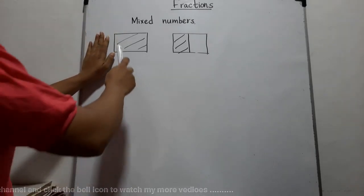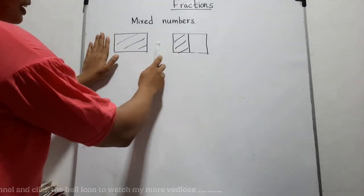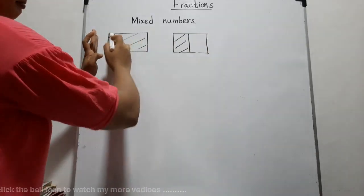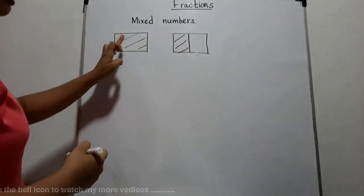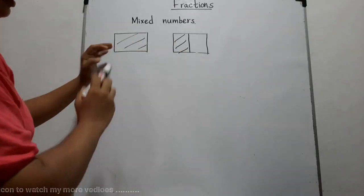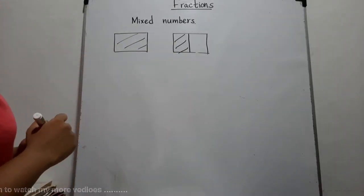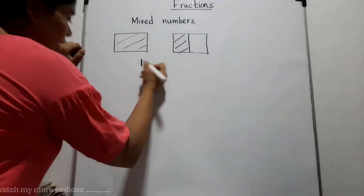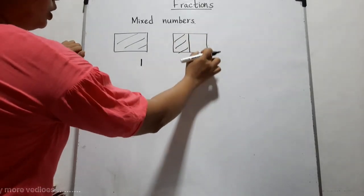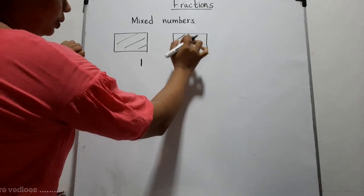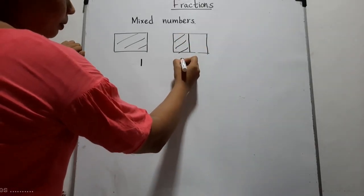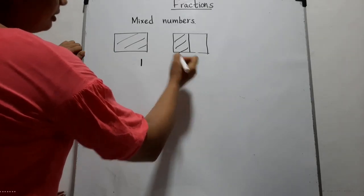Look at the board. There are two identical chocolate bars — rectangular shapes. I want to represent the given part as a fraction. Here, the whole figure is shaded. For the second one, the rectangular shape is divided into two equal parts and one portion is colored. The portion that is colored is half.